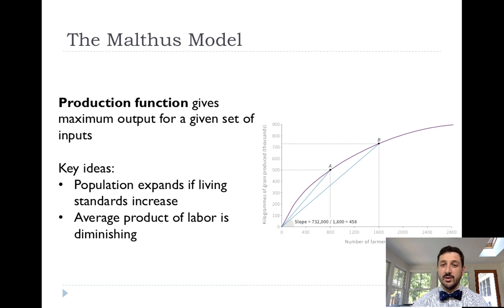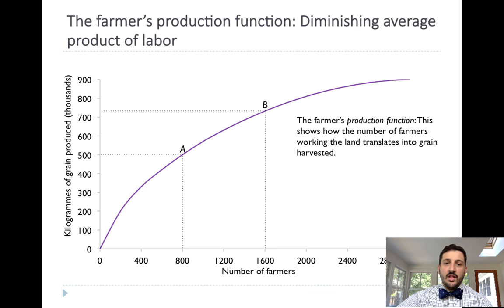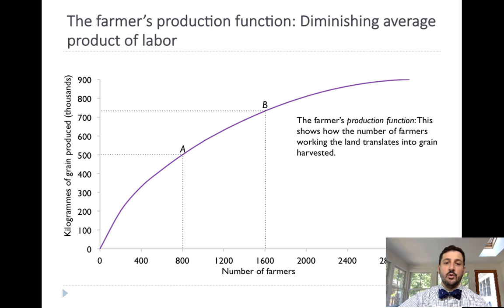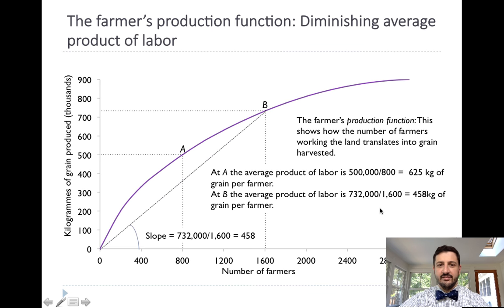Malthus said that as we add more and more farmers, we just produce less and less, and growth is not possible. Even when we get better at producing, all we do is add more people in the long run, and again, growth per person is not possible. For example, if we produce at point A with 800 farmers, we're able to produce 500 kilograms of grain. At point B, when we double those farmers from 800 to 1,600, we don't double the grain — we go from 500 to about 720. The average product of labor goes from 625 to 458, and the marginal product is falling even faster.